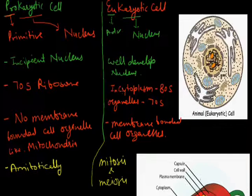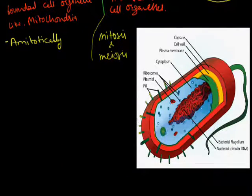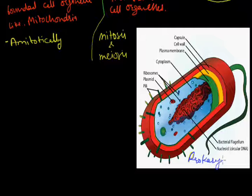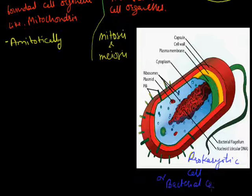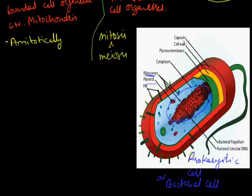Eukaryotic cells are well-developed cells. Prokaryotic cells, such as bacterial cells, have no nucleus — only DNA material with no nuclear membrane — no cell organelles, but they do have plasmids, 70S ribosomes, cytoplasm, plasma membrane, cell wall, and capsules. This is the basic difference between the prokaryotic cell and the eukaryotic cell.